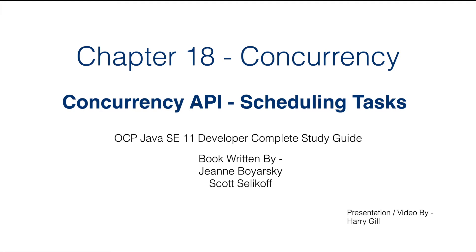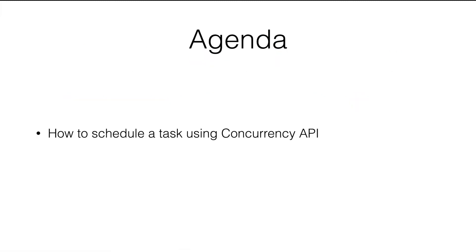Hello everyone, this is Harry Gill and I am back with the next topic of chapter 18 — the Concurrency API. Today we will be discussing scheduling tasks. In real-world scenarios it's very common to have a task done at regular intervals — say you want to create a job which runs every five minutes and checks the status of another program, or you want to generate and send a report at the end of every day.